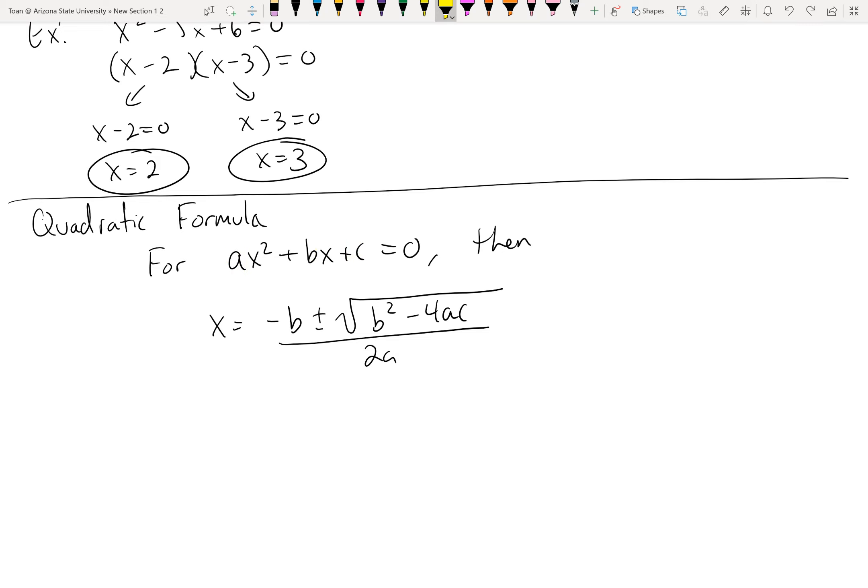So the only real challenge, or the only real importance about this topic is, when you do the quadratic formula, your discriminant may be negative. But that's okay, we know how to handle that now. Anytime you have a negative inside a radical, just pull out that negative with an i.